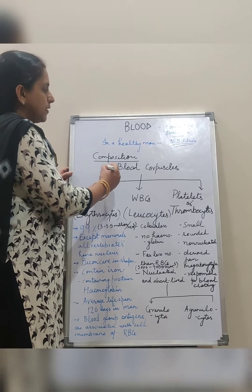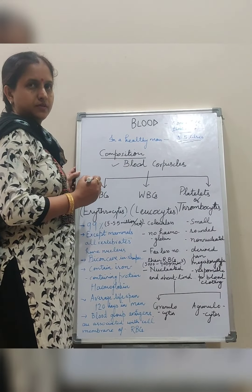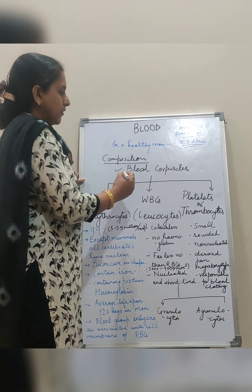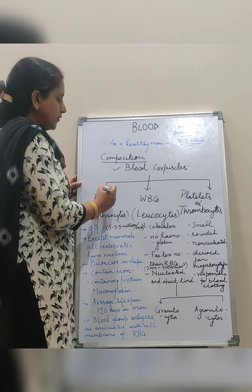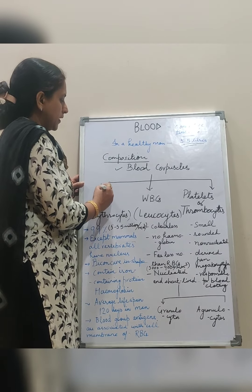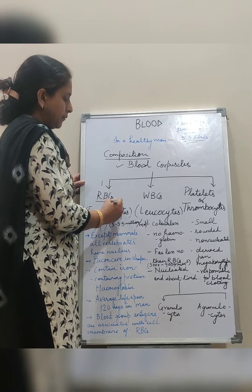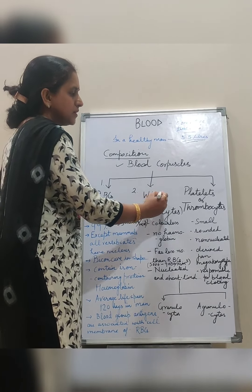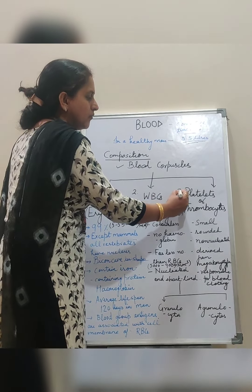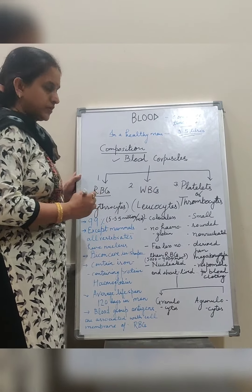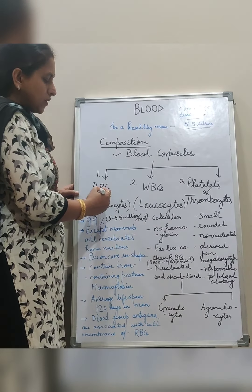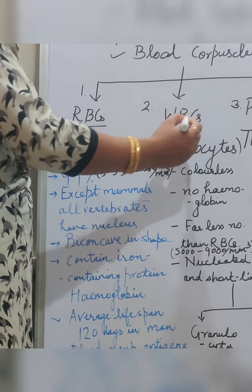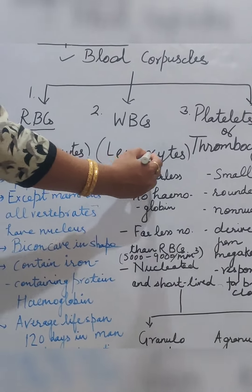Now I will describe what are blood corpuscles. This is the cellular part of the blood. We can divide these cells into three categories: first, red blood cells; second, white blood cells; and third, platelets or thrombocytes. Red blood cells are also known as erythrocytes, and white blood cells are known as leukocytes.